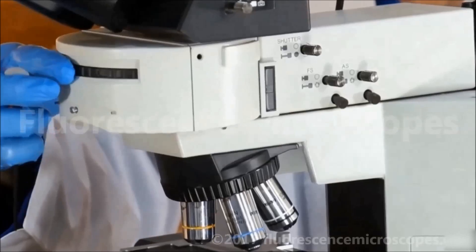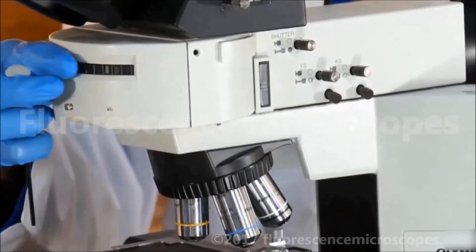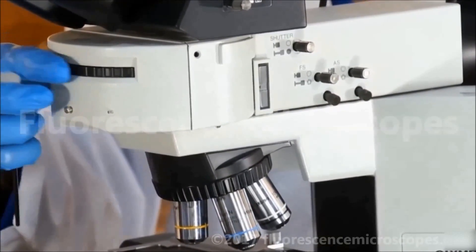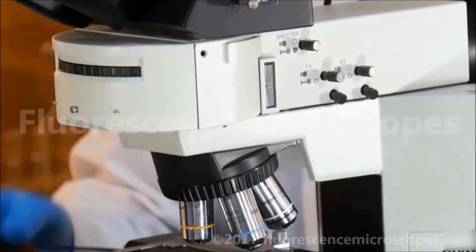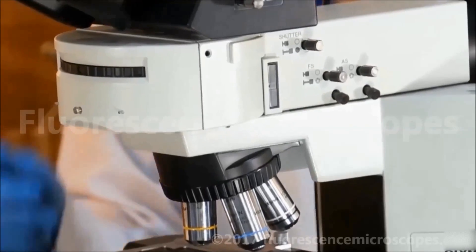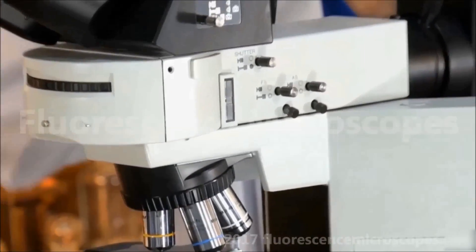This is the knob to change the reflectors, the dichroic filters. This is where the screw is held.